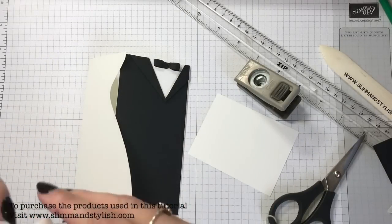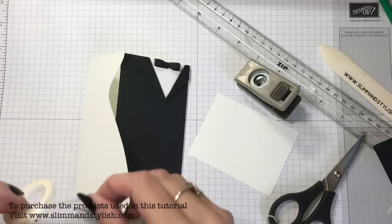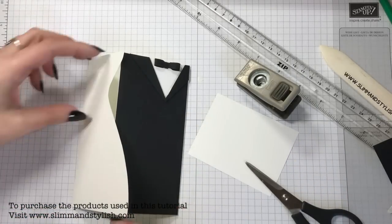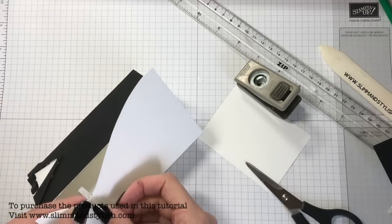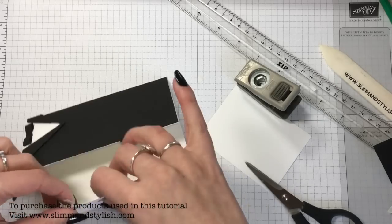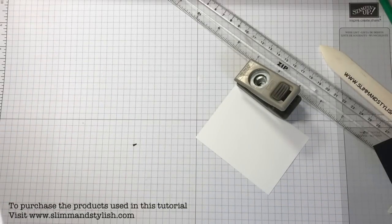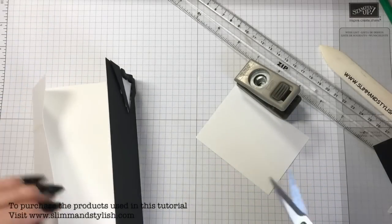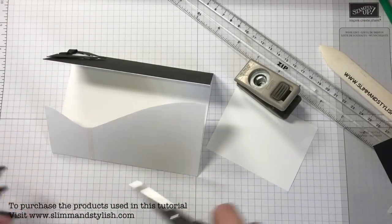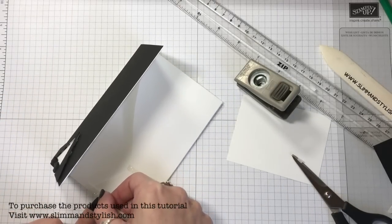For the dress I've used the Myths and Magic glimmer washi tape and run that across the side there. I've just stuck that under and then I've also just run it across the top as well.